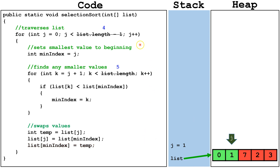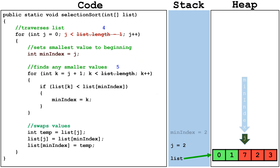We go back to the top of the external for loop and increment j by 1, so now j equals 2. We check is j still less than 4 — it is, so we continue. We set min index equal to j. We set k equal to j plus 1 and check is k still less than 5 — it is, so we check is list index k smaller than list index min index. It is, so we set min index equal to k.